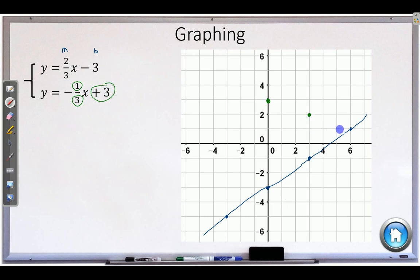Down 1 over 3 puts us right here. You can even go backwards over 3 and up 1. There is our second line.